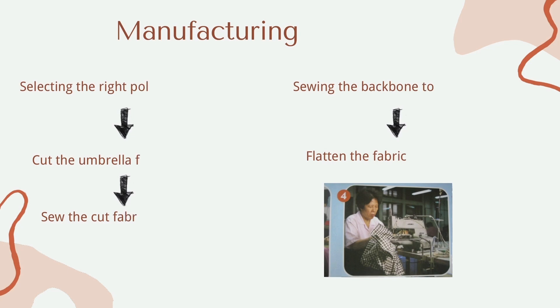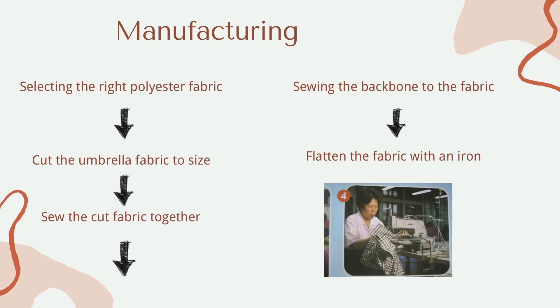For manufacturing, first choose a suitable polyester fabric, then cut the umbrella fabric, and sew the cut fabric together. Sew the backbone and fabric together and finally iron the fabric flat.